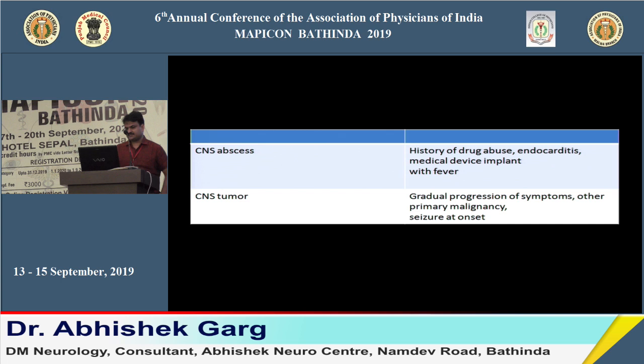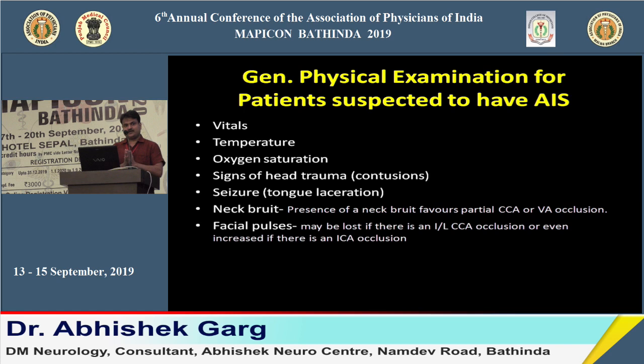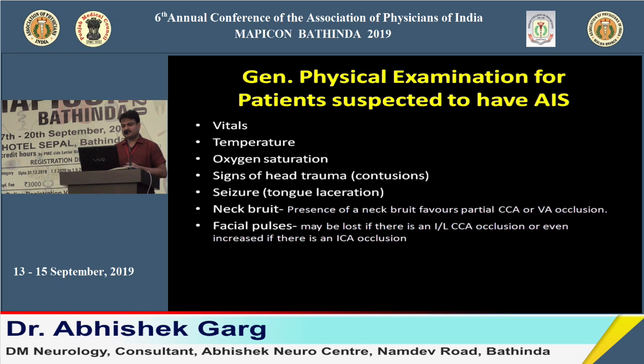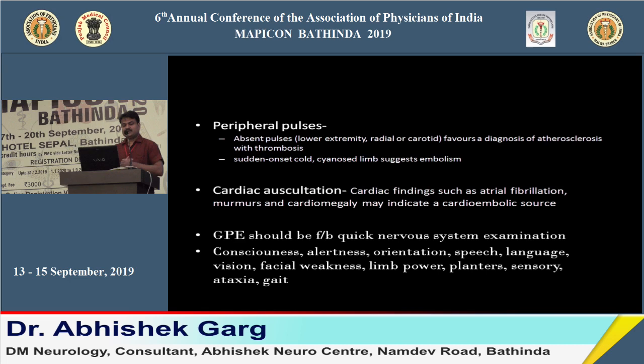For general physical examination in suspected acute ischemic stroke, apart from vitals, temperature, and oxygen saturation, we should look for signs of seizure, trauma, and neck bruit. Neck bruit examination is very important — finding a bruit favors partial carotid or vertebral artery stenosis. Peripheral pulses should also be assessed, as absent pulses suggest atherosclerotic disease. Cardiac auscultation may reveal atrial fibrillation, murmur, or cardiomegaly suggesting a cardioembolic source.